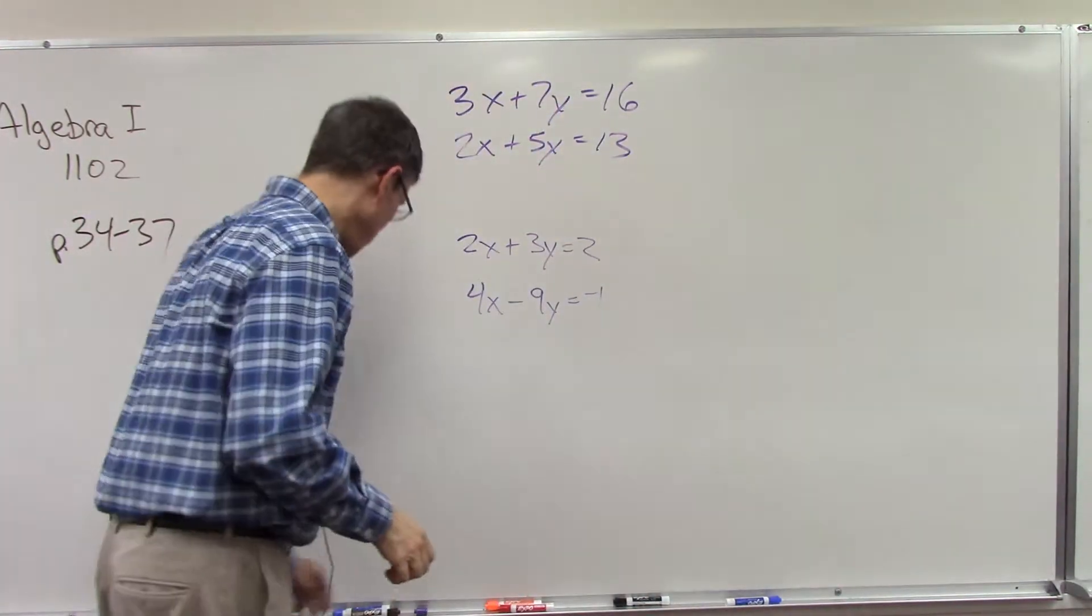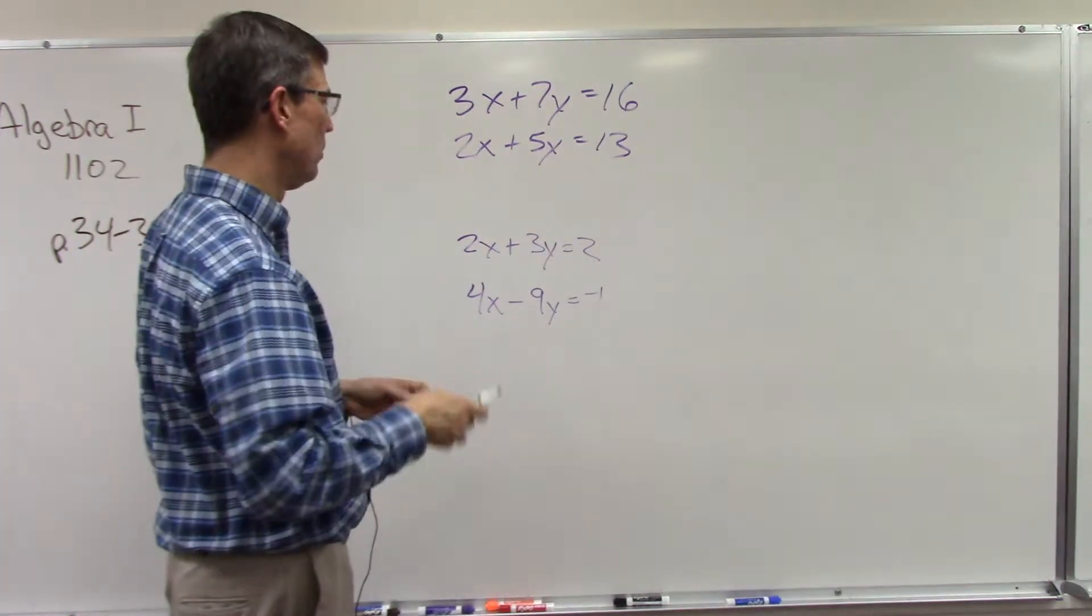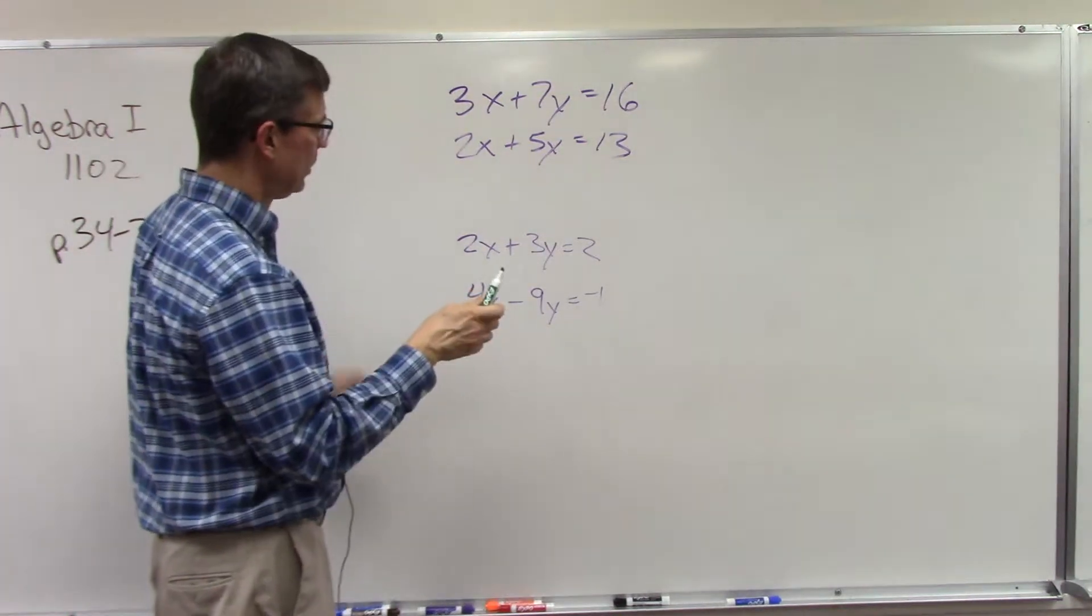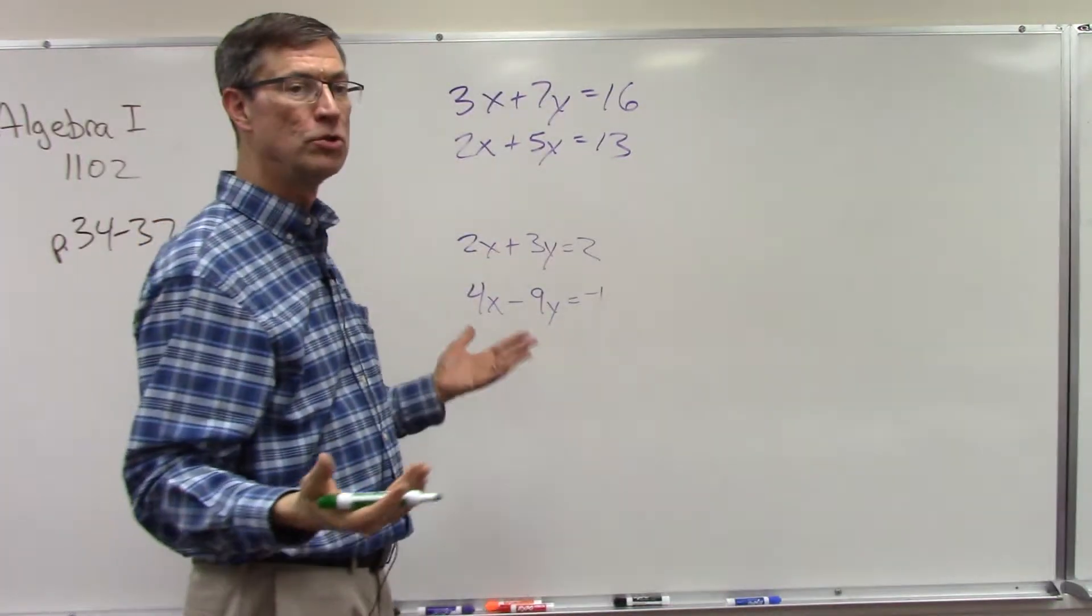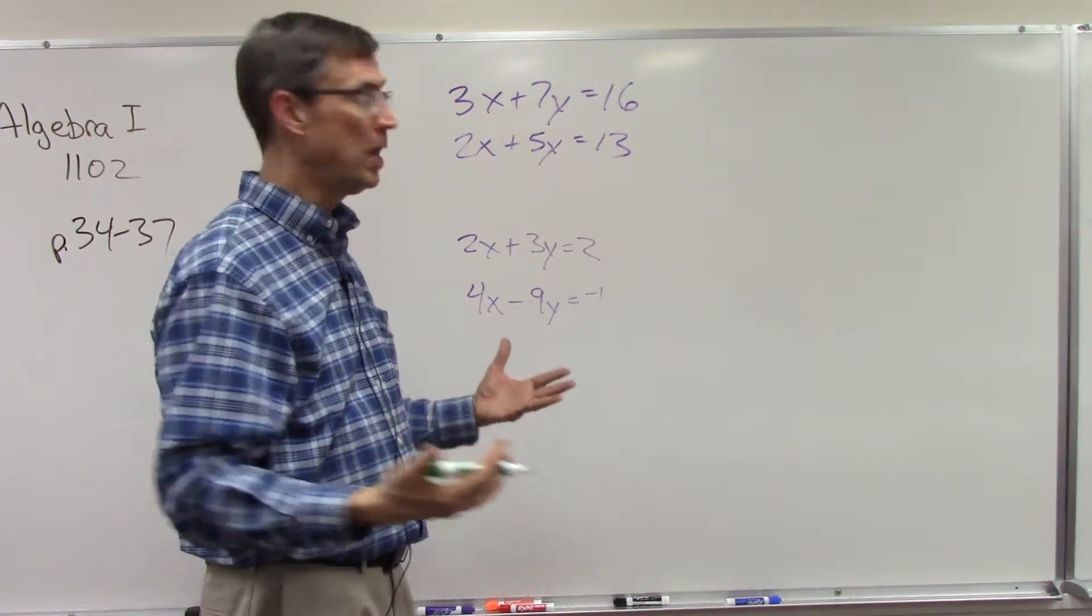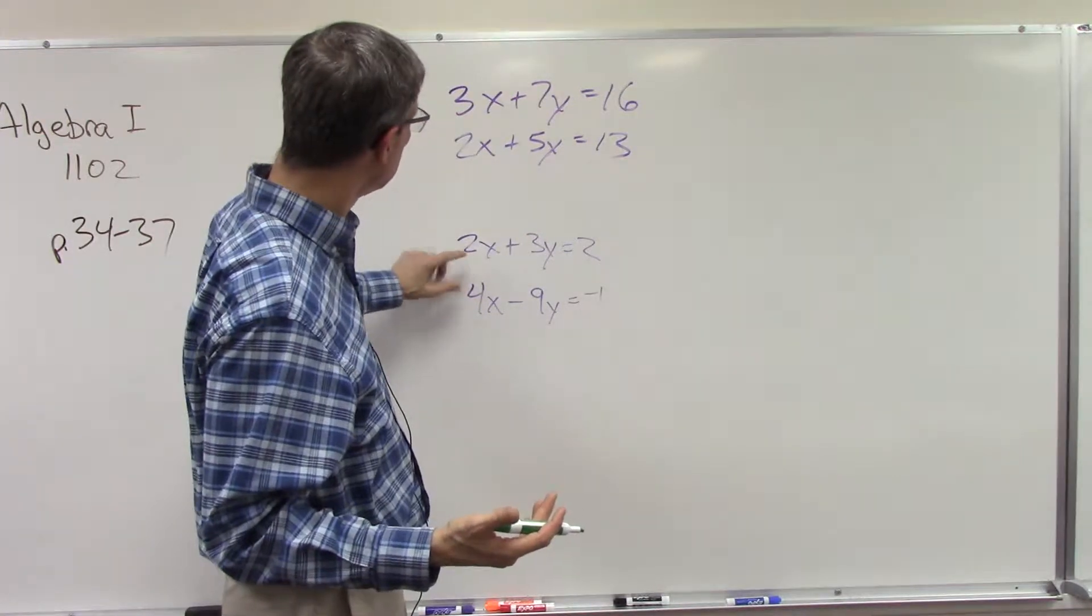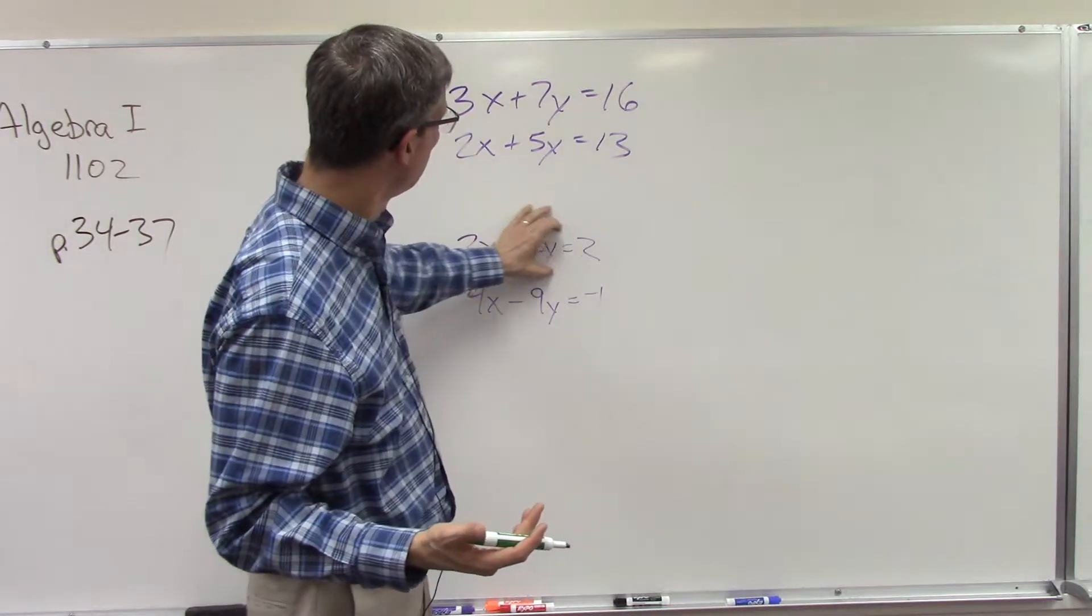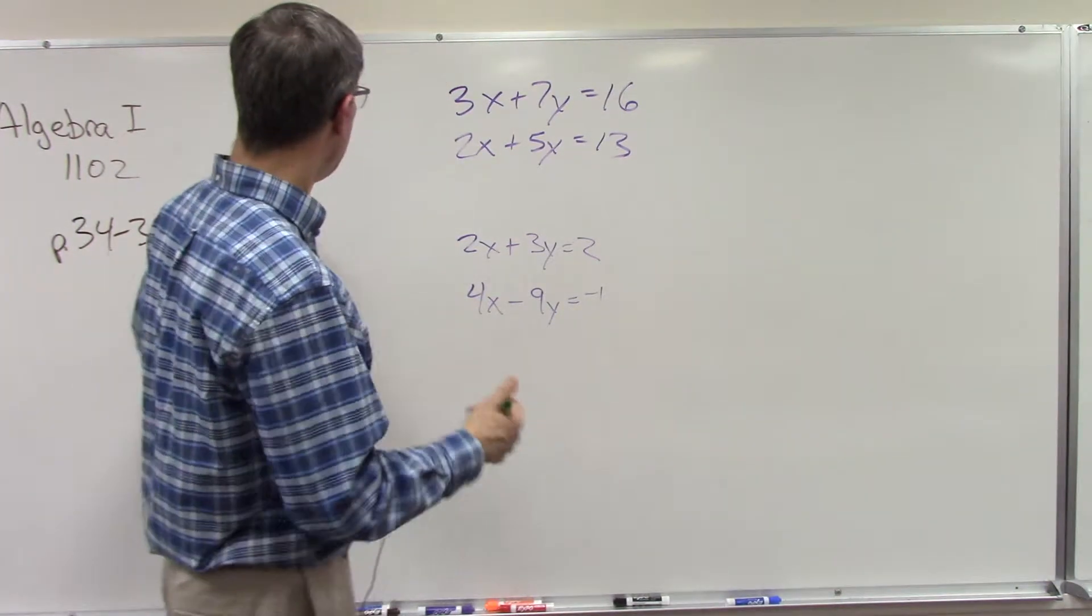I'm going to start with the one down here and then I can erase it. There's actually so many different ways you can do this and get the right answer - there's not just one right way. I'm looking at this one and saying, you know what, if I wanted to get rid of x, I could multiply this equation through by negative 2.